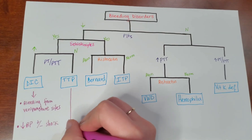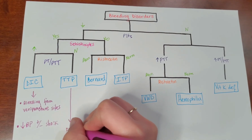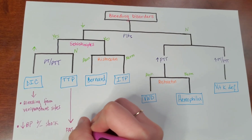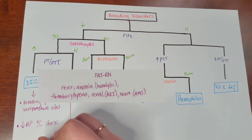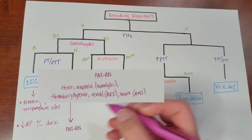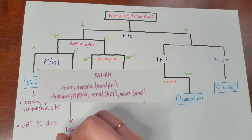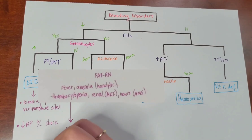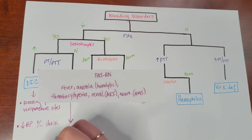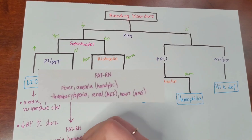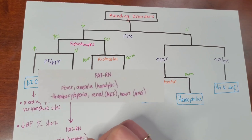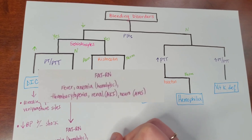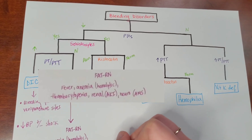For TTP, you can think of the mnemonic FATRN, like registered nurse. F is for fever. A is for anemia. T will be for thrombocytopenia. R will be renal, specifically acute kidney injury. And N will be neuro, which would be altered mental status.